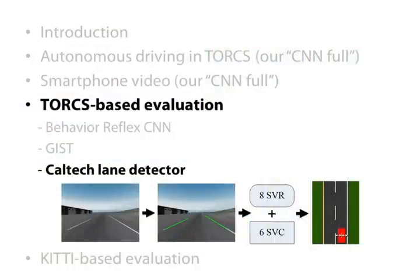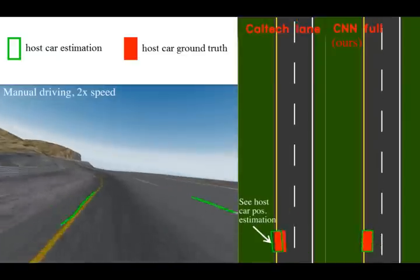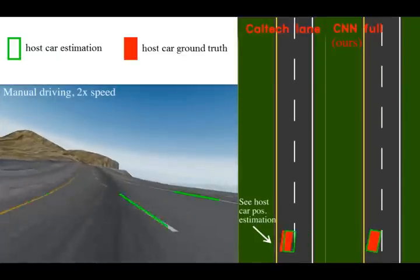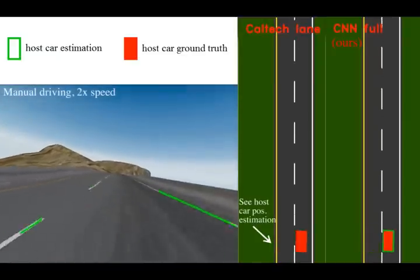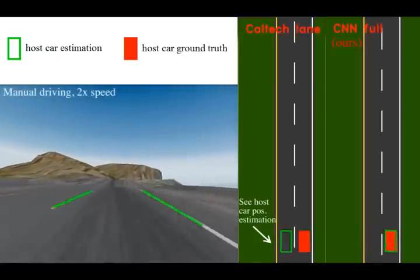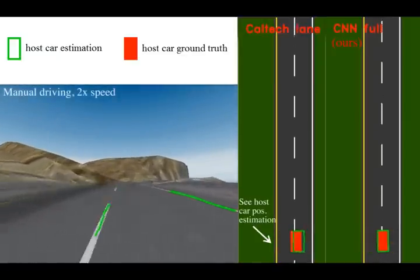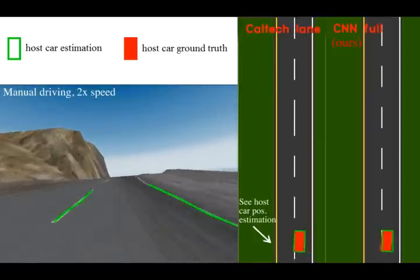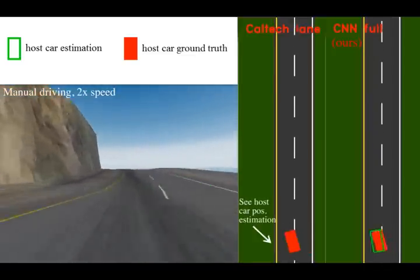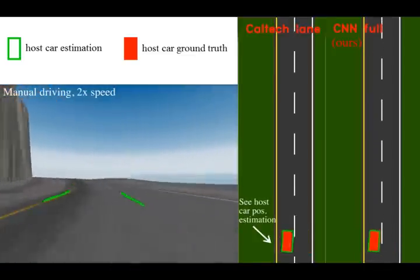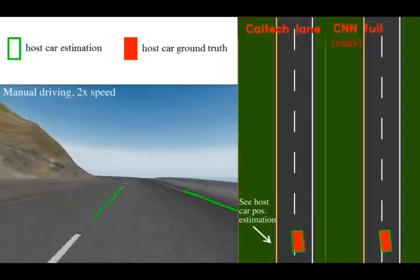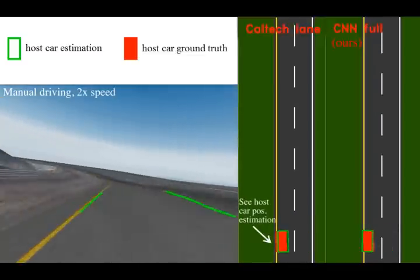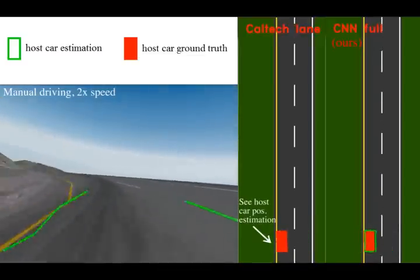We compare the perception accuracy between the Caltech lane detector based system and our direct perception CNN. The different systems are running on the same testing set collected by having a human player manually drive on the track. The lane perception of the Caltech lane detector based system works poorly as well.